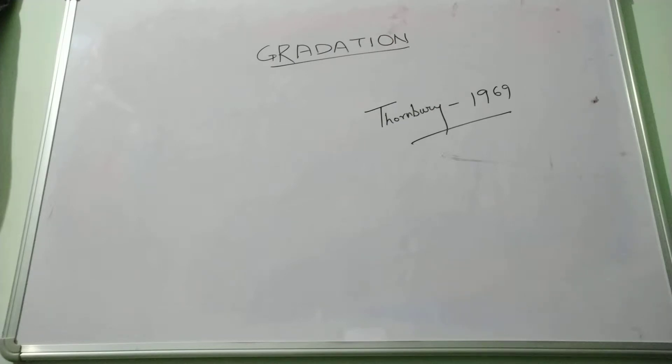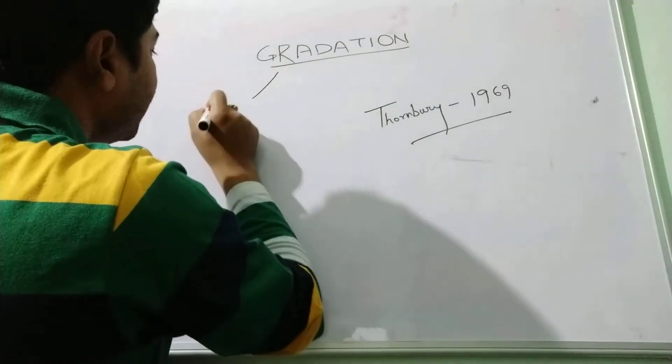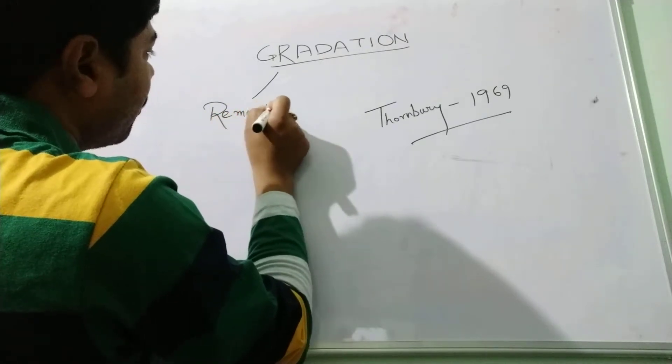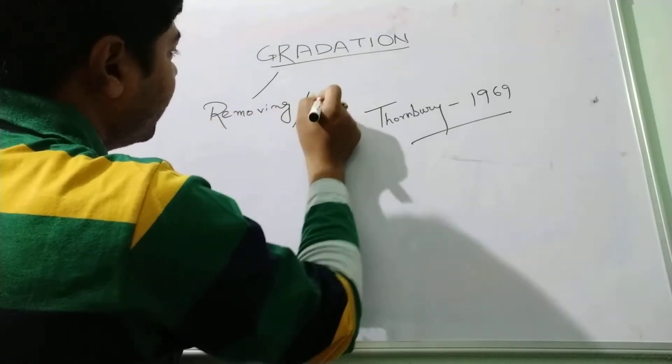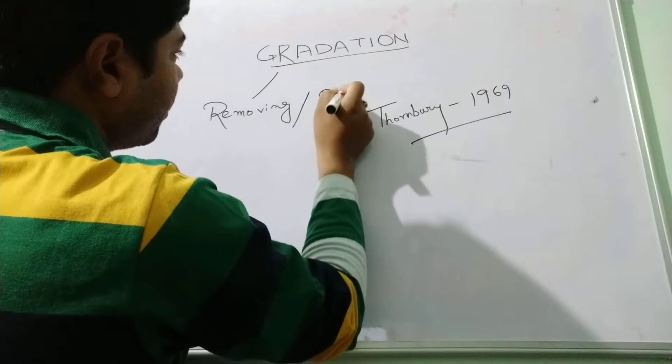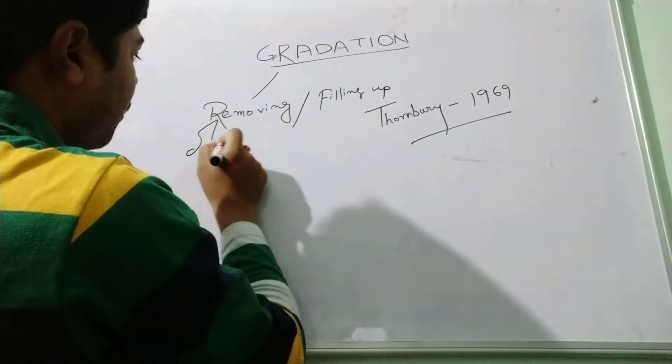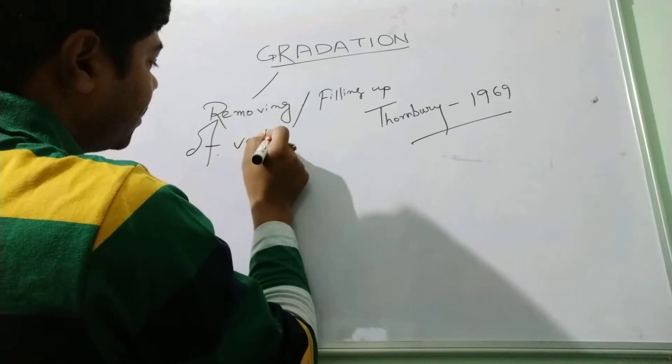Gradation is the process of removing or filling up vertical irregularities on the surface of the Earth. That is, the removing or filling up of vertical irregularities.